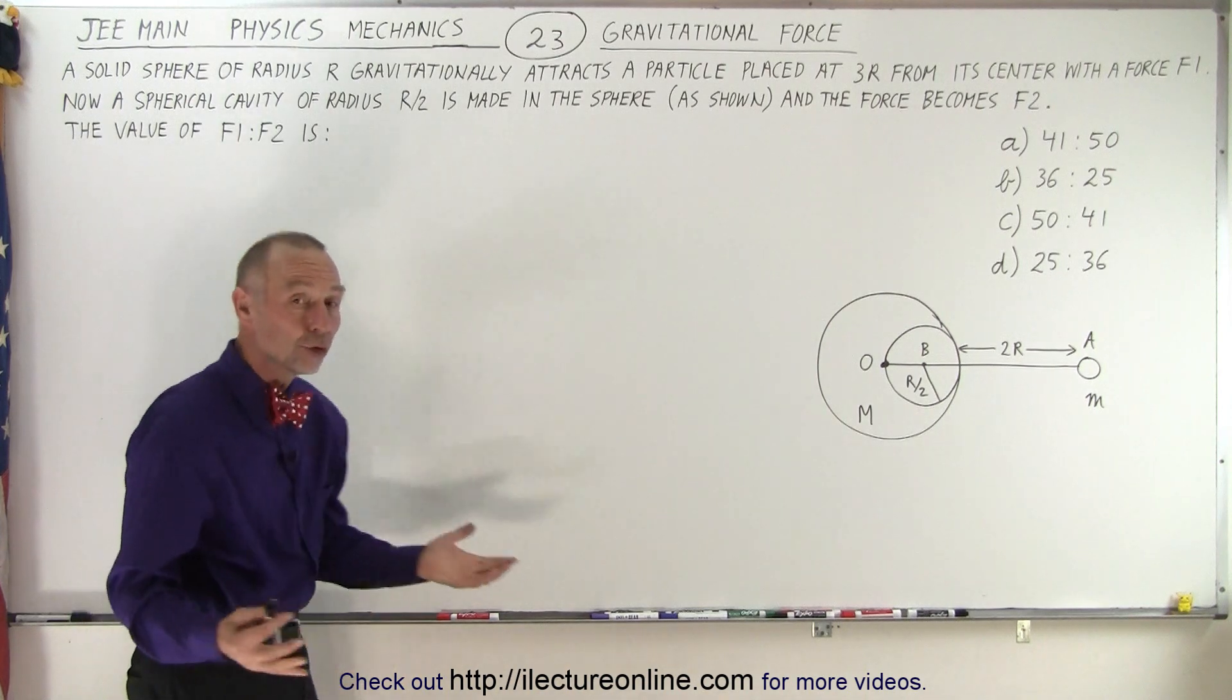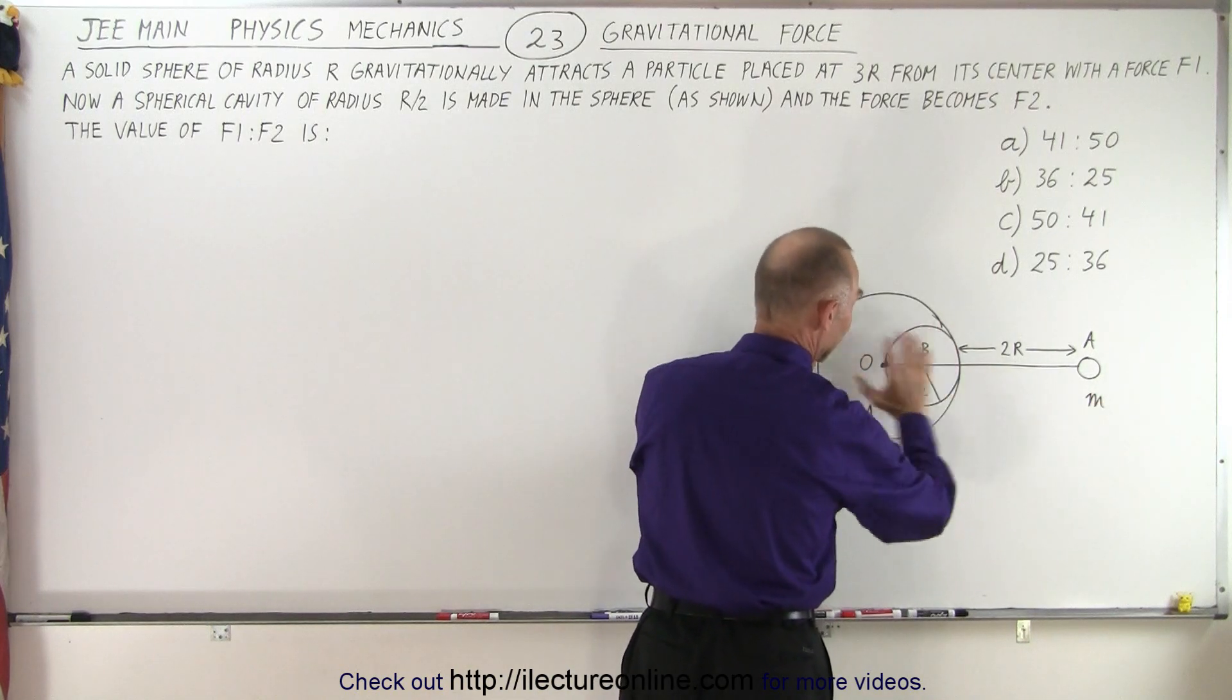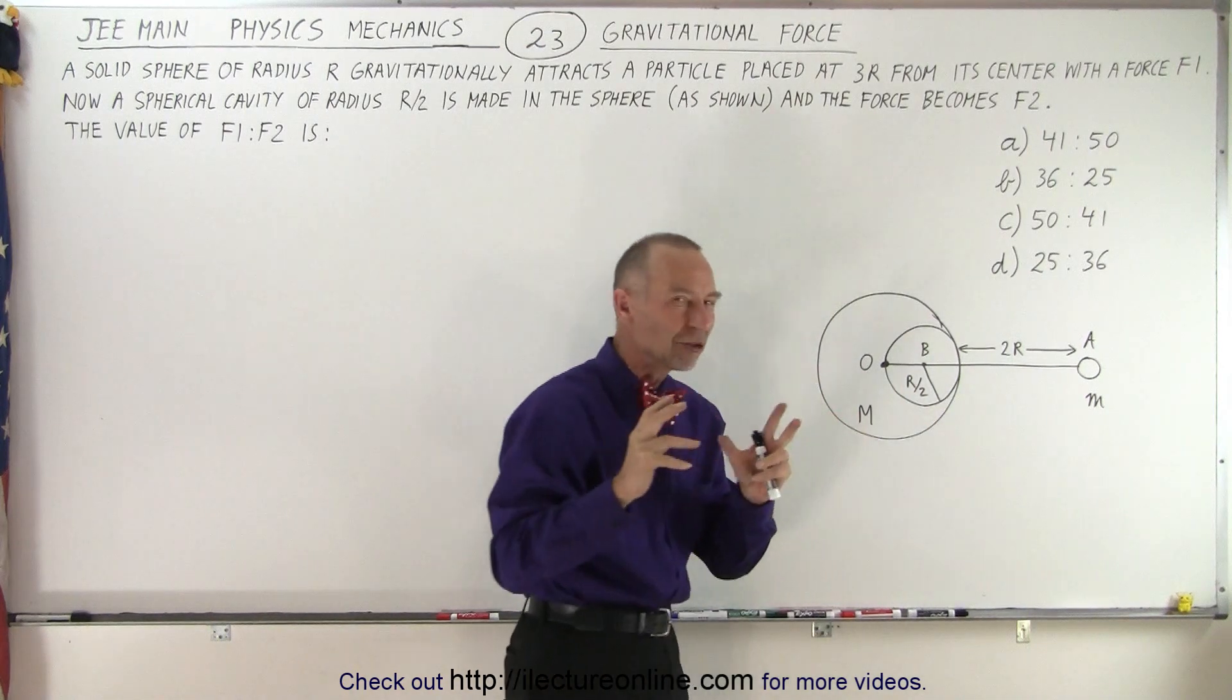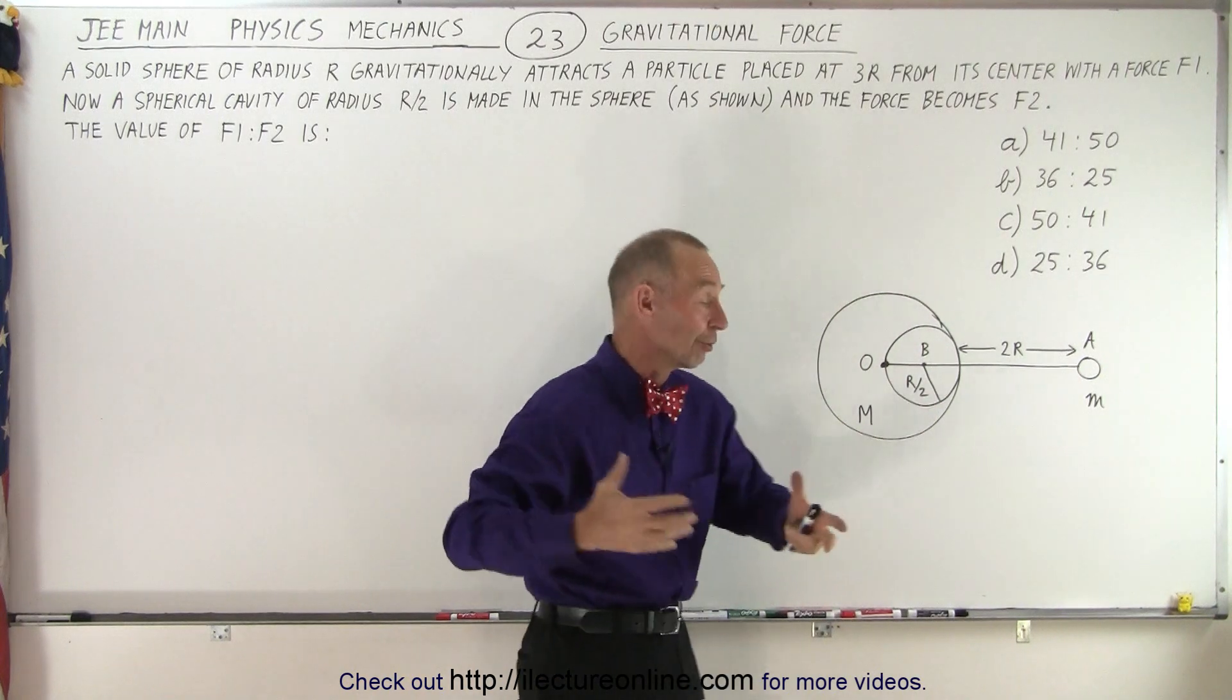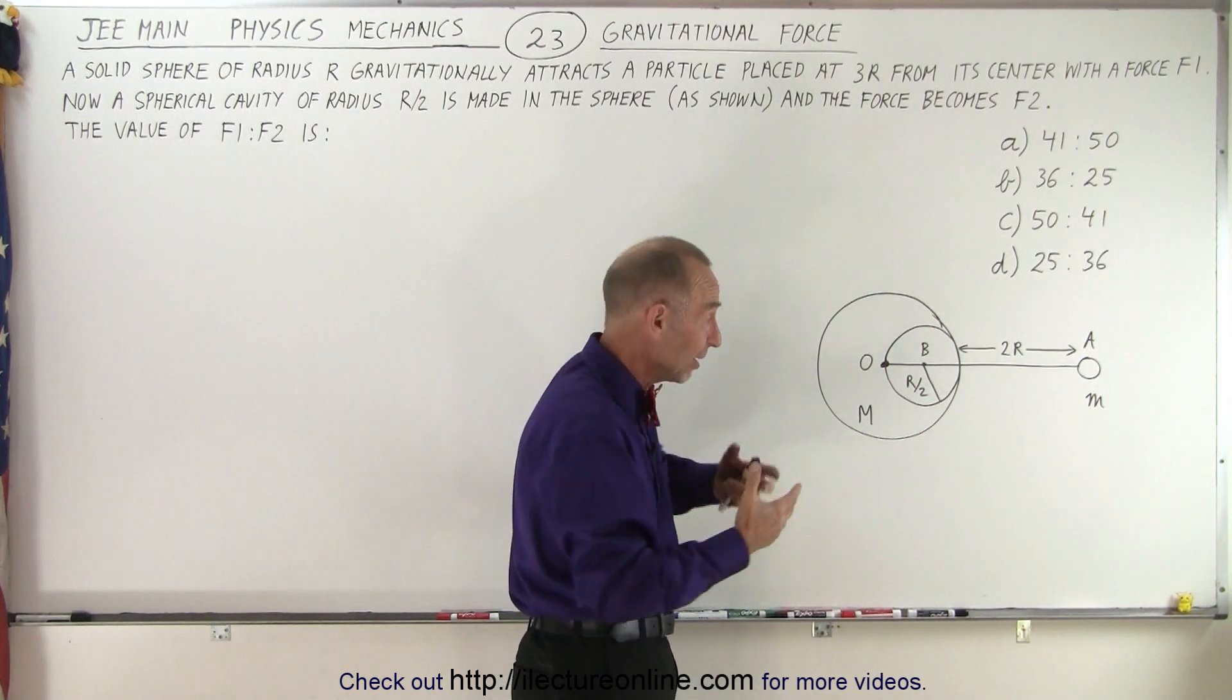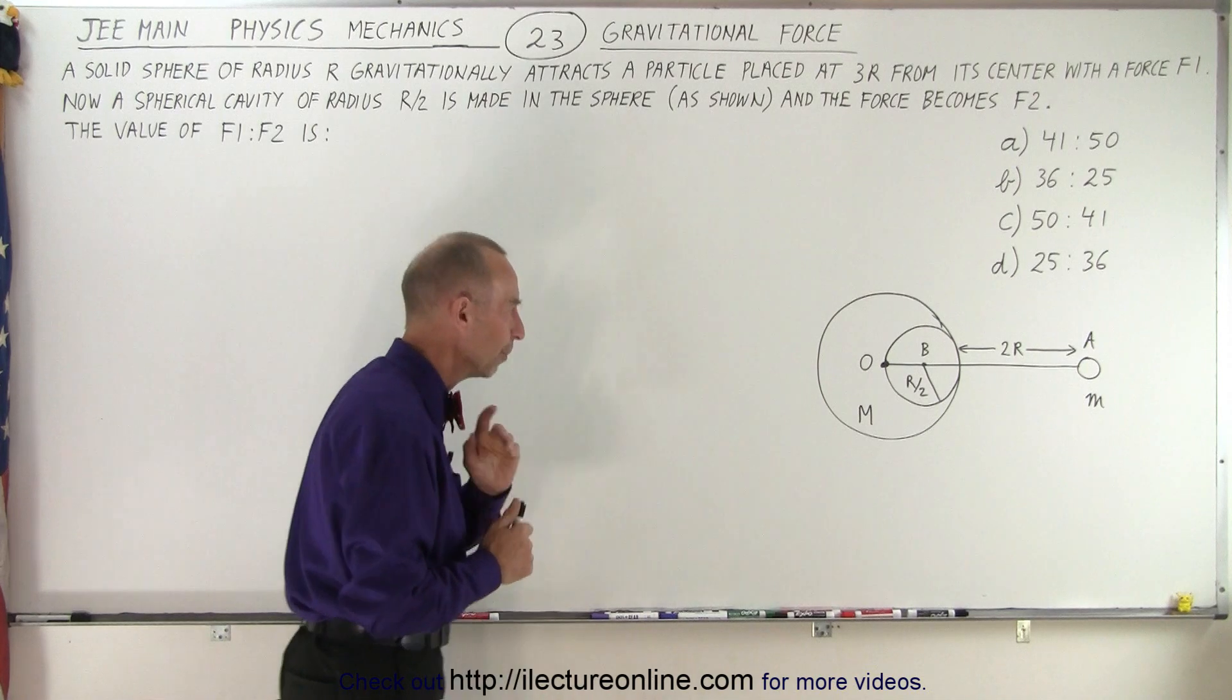So I think what we should do is calculate the gravitational force between the small m and the big M before the cavity is made, and then calculate the gravitational force between the cavity and the mass. You say well wait a minute how can you calculate the gravitational force of a cavity? Well it becomes a negative gravitational force in effect because it's removed, the particles removed, and then I think we can go ahead and find the ratio. So let's try that.